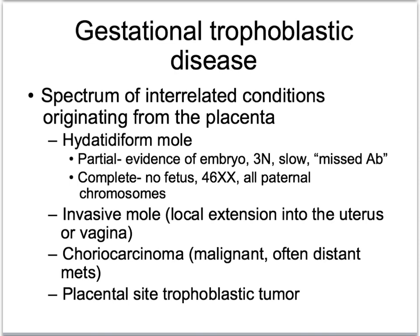Looking more closely at the subtypes, we can divide hydatidiform mole into a partial mole, which will have evidence of an embryo, will be triploid in karyotype, may present as a slow gestational period, and will present as a missed abortion. A complete hydatidiform mole has no fetus, will be 46XX with all chromosomes coming from paternal origin, either through an empty egg fertilized by a sperm that divides or by two sperm.